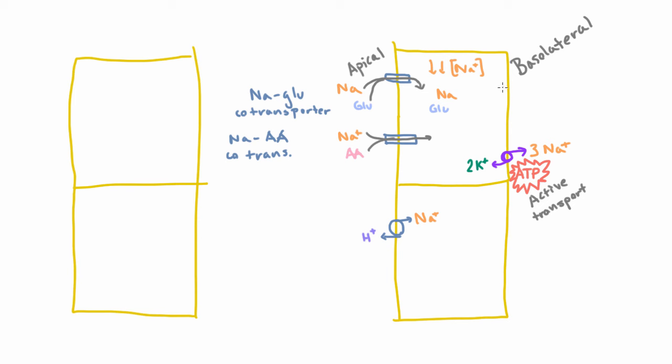But luckily we have glucose channels on this side, on the basolateral side, that let glucose diffuse out. Its concentration is quite high in the cell because of the transporter and so it diffuses out.